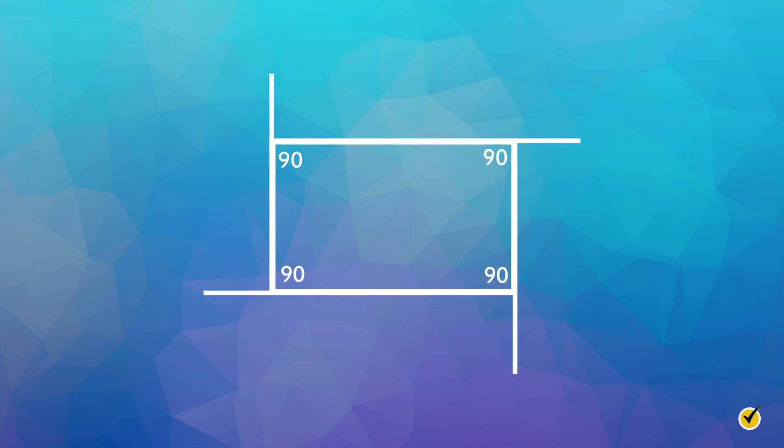Now let's take a look at a rectangle. We will do the same thing and extend each side. We know that the interior angles are 90 degrees, which makes the exterior angles also 90 degrees. We will add the exterior angles to find the sum of the exterior angles of a rectangle, which is 90 times 4, equaling 360 degrees. Based on our two experiments, we can conclude that the sum of the exterior angles of any polygon is always 360 degrees.